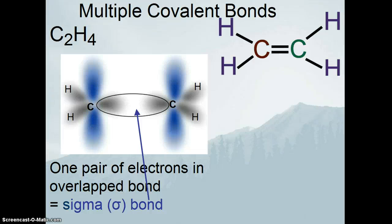Okay, so anytime you have physical overlap of orbitals, we call that a sigma bond. All single bonds are sigma bonds. They're a physical overlap of orbitals.